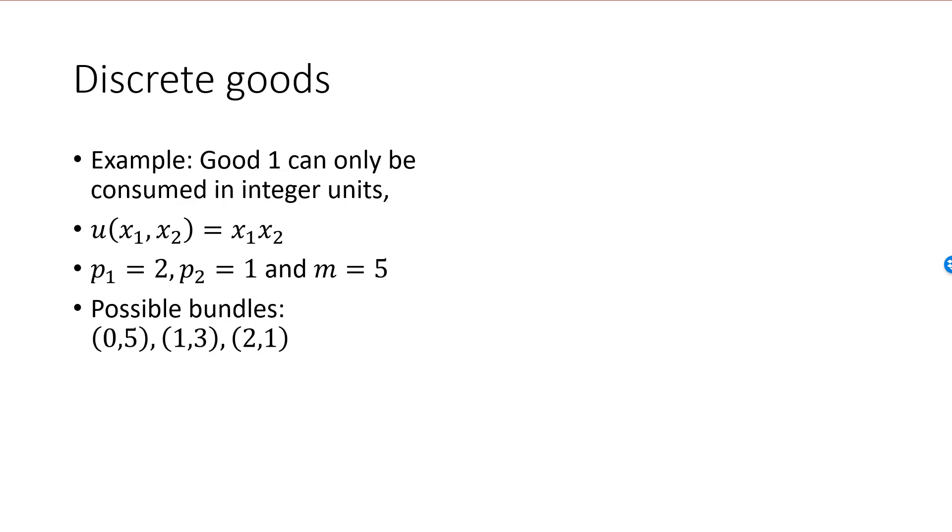To figure out which is the optimal bundle in this case, all we have to do is plug in the bundles into the utility function and find the one that returns the largest utility. The 0, 5 bundle will give us 0 units of utility.